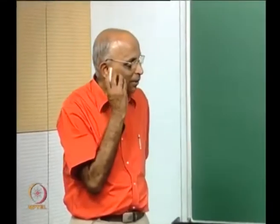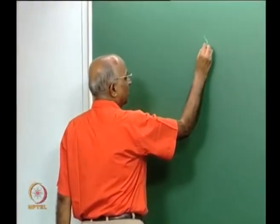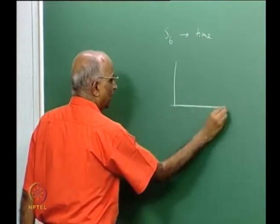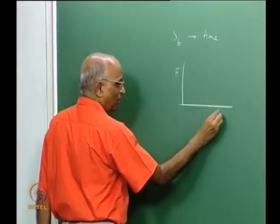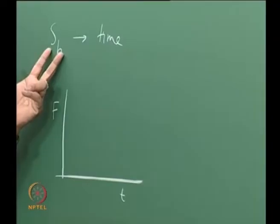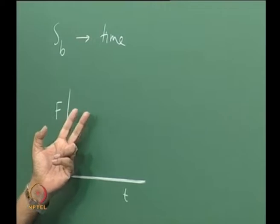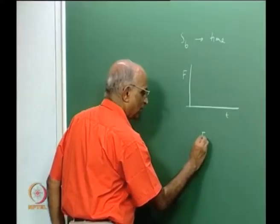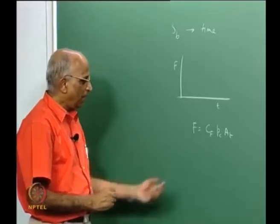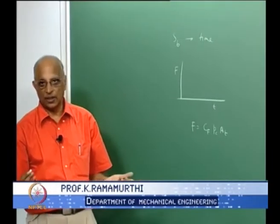Good afternoon. We will continue with solid propellant rockets. We have seen how the burning surface area can be calculated to evolve with time, and therefore I can now determine how the thrust of a solid propellant rocket will change with time. Once you know the burning surface area, you can calculate the value of pressure in the motor — namely the equilibrium pressure — and equilibrium pressure into thrust coefficient into the throat area gives the thrust: F = CF × Pc × AT.